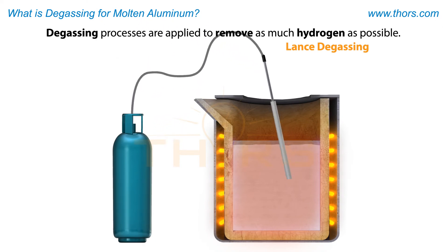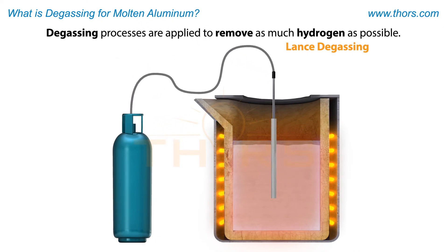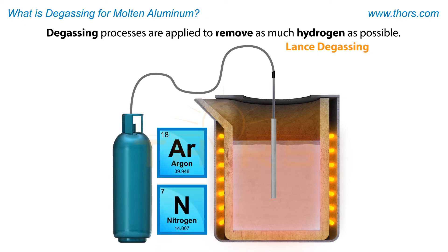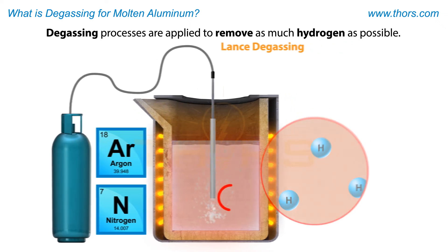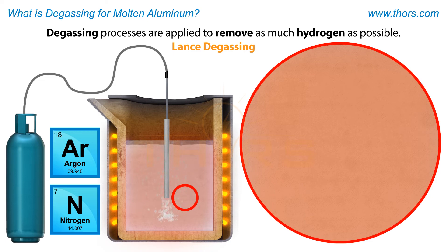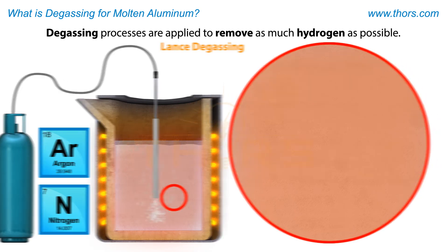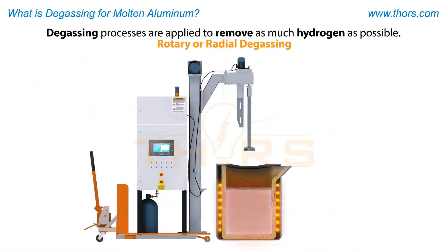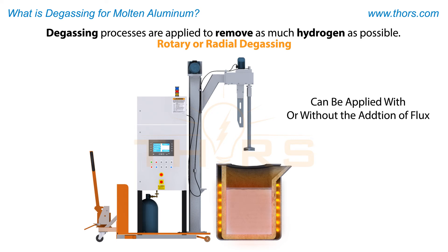Lance degassing involves inserting a shaft with small holes or diffusers into the melt. Inert gases such as argon and nitrogen are run through the shaft and into the melt. The small inert gas bubbles collect the hydrogen and lift it to the surface. Rotary or radial degassing is now more common than lance degassing and can be applied either with or without the addition of flux.